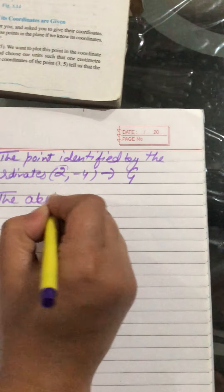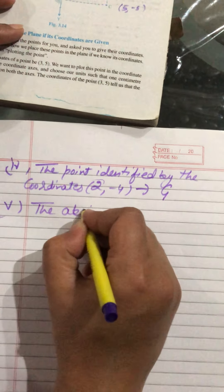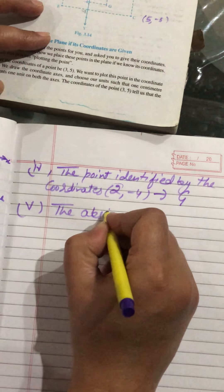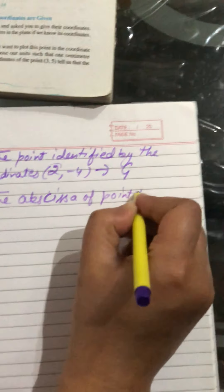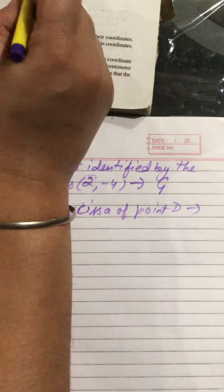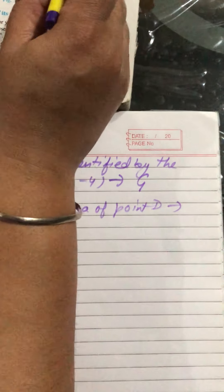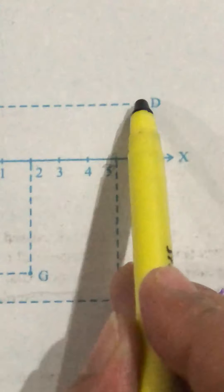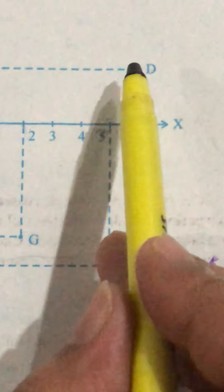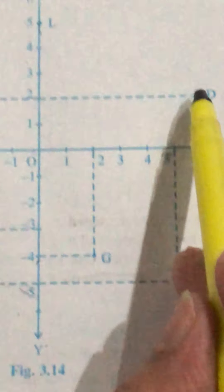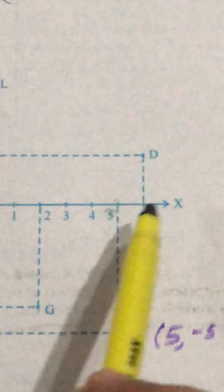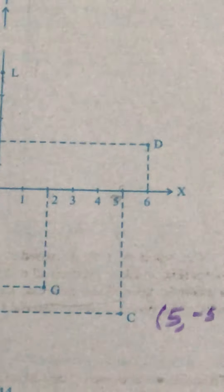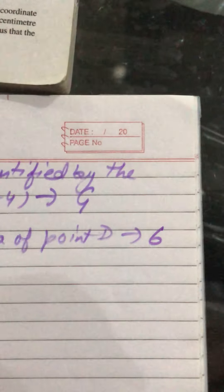Next is the abscissa of point D. Abscissa is another name for the x-coordinate. Looking at point D on the graph, the x-coordinate of D is 6. So the abscissa of point D is 6.